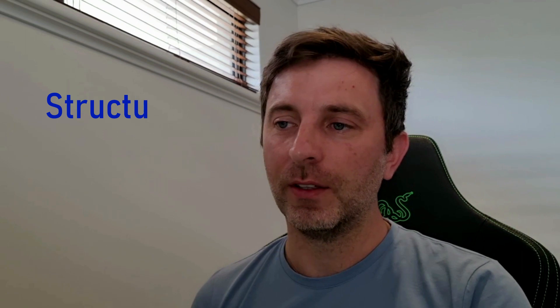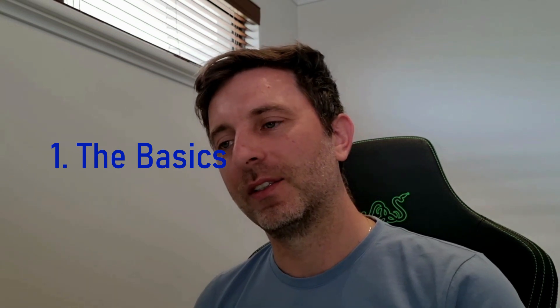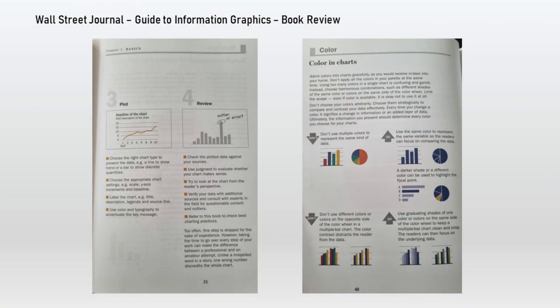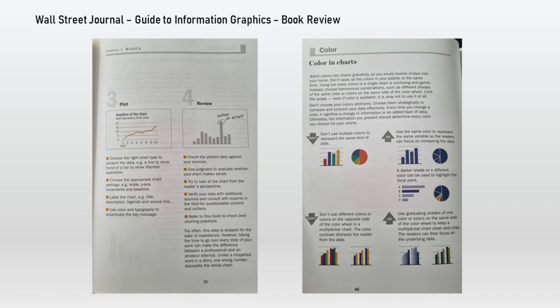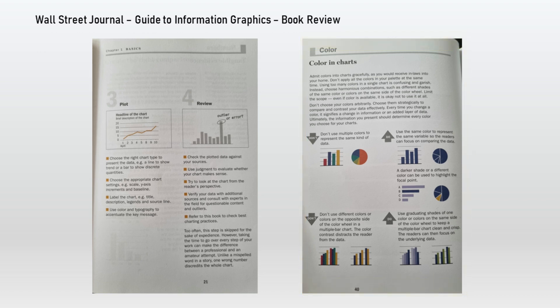Looking at the structure and content, this book contains five main chapters. The first chapter is more around the basics of using things like data context, using color effectively, consistent fonts, appropriate line types and things like that. If you look here, there's an example looking at the steps of creating and reviewing visuals, and also advice on the appropriate do's and don'ts of using color. This early chapter might be overly basic for some, but it's very useful for beginners, or even as a quick refresher for those who may have picked up some wayward habits along the way.